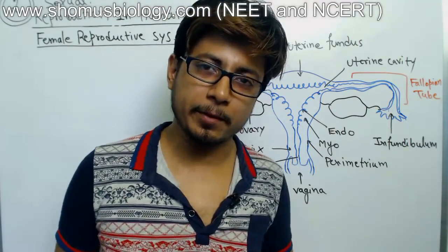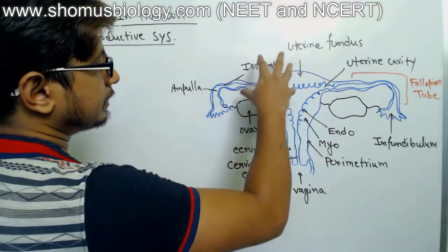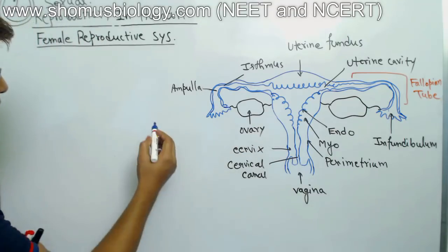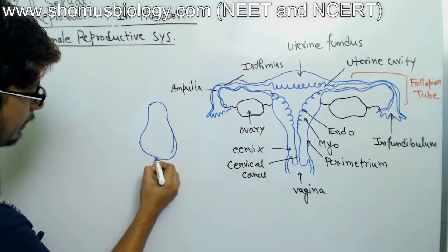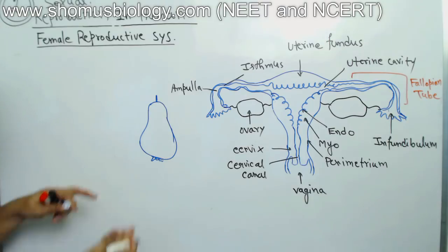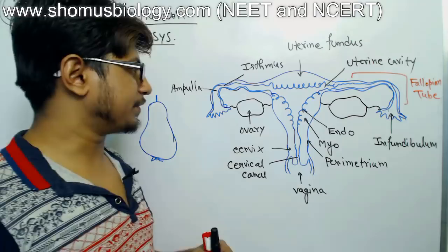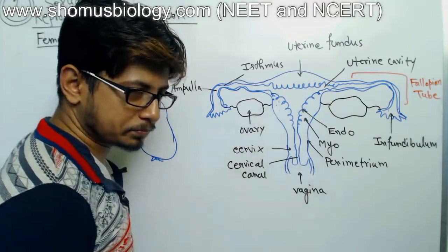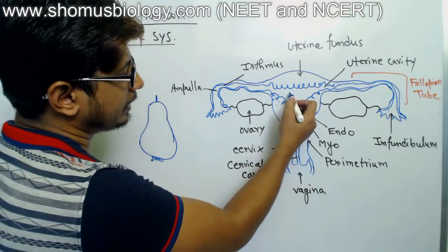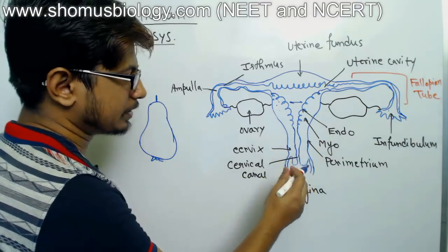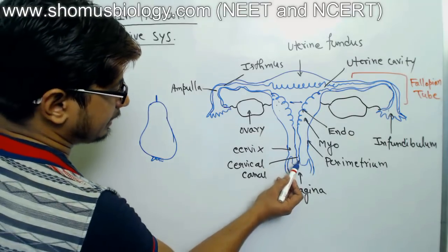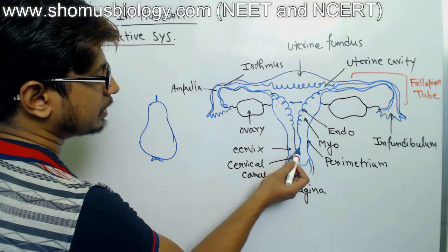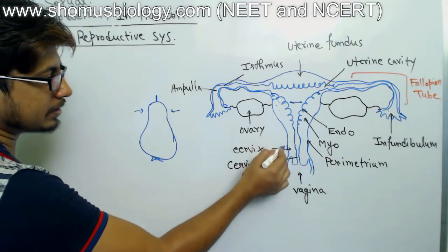The major component of the female reproductive system is the uterus. If you look at the uterus, it looks like an inverted pear. It has a muscular layer with a canal inside — this canal varies in diameter, being constricted in some places and relaxed in others. At the end, the canal is known as the cervical canal, and it is very constricted. The cervical canal connects to a slightly wider space known as the cervix.